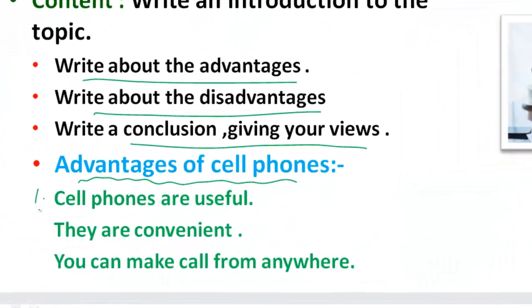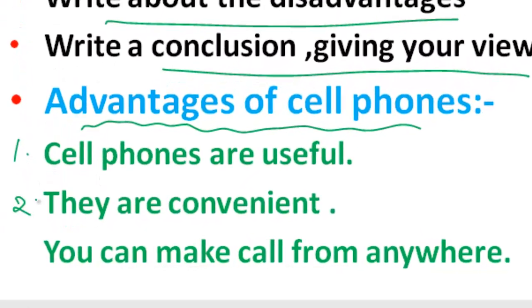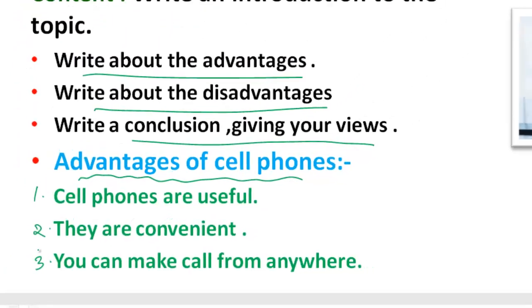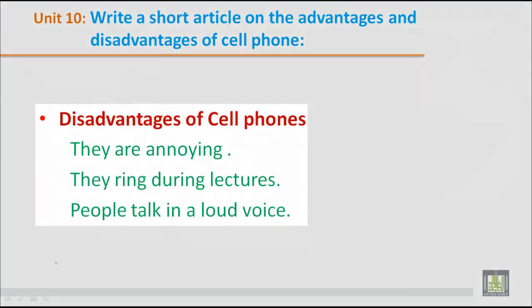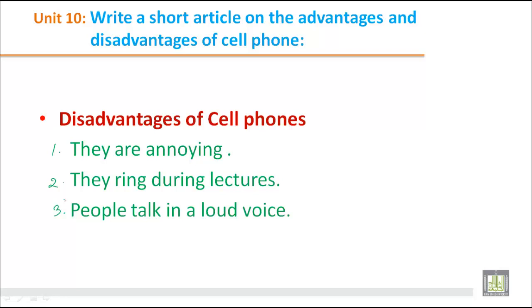To recap: advantages of cell phones — they are useful, convenient, and you can make calls from anywhere. Disadvantages — they are annoying, they ring during lectures, and people talk in a loud voice. I hope you now have a good idea of how to write an article on the advantages and disadvantages of cell phones. Have a nice day, see you in the next class.